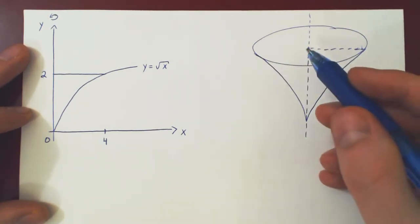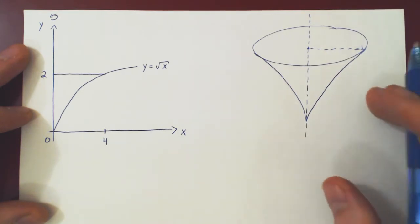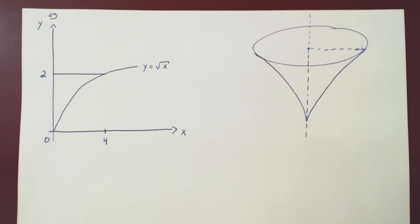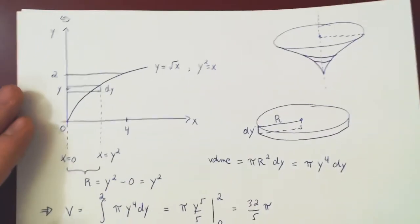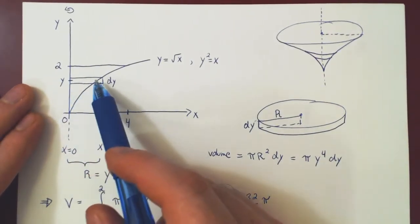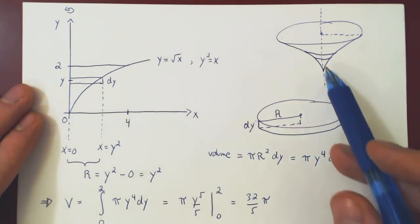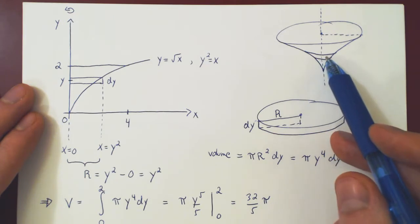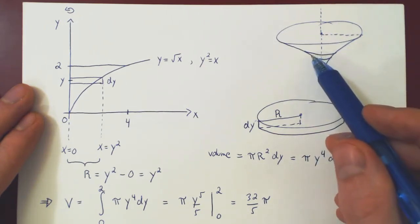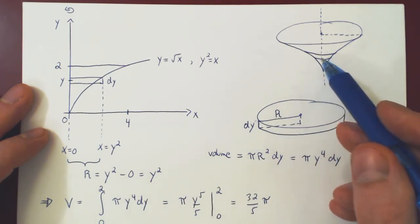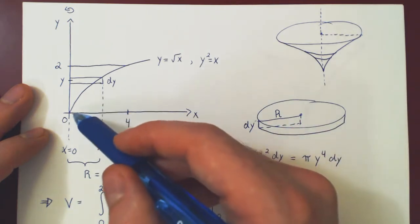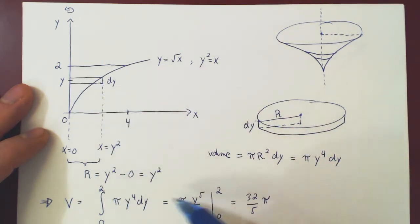The question we want to ask is: what is the volume of this solid of revolution? In the previous video, we solved this problem using a set of horizontal rectangles. Those horizontal rectangles generated disks — little cross-sections of the full solid. We found the volume of any given cross-section positioned along the y-axis as pi y to the 4 dy, and by summing from y equals 0 to 2, we obtained a total volume of 32 over 5 pi units cubed.